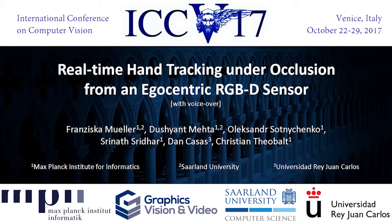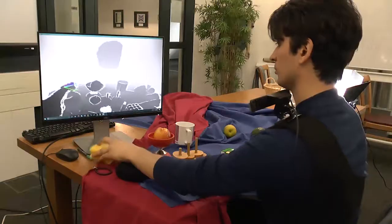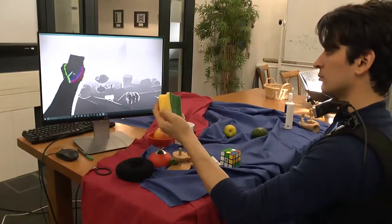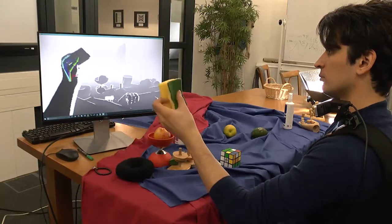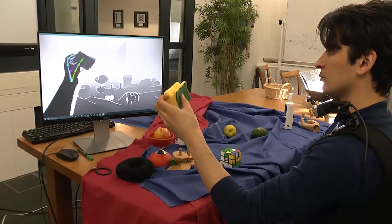We present a method for real-time egocentric hand pose estimation using a single commodity RGBD camera. Our method can track hands in scenes with cluttered backgrounds, occlusions, and complex hand-object interactions.